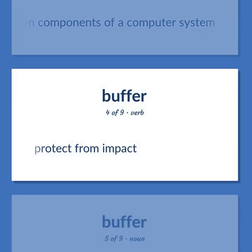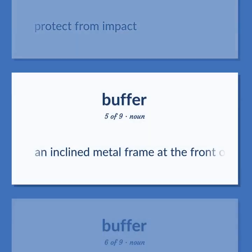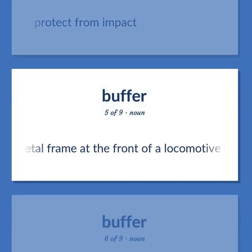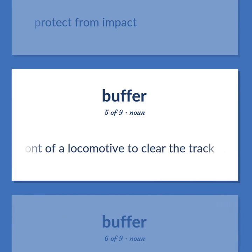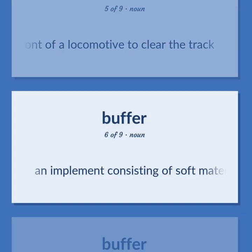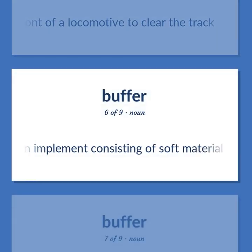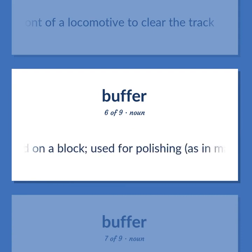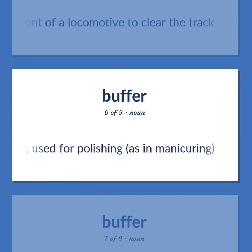Buffer: protect from impact. An inclined metal frame at the front of a locomotive to clear the track. An implement consisting of soft material mounted on a block, used for polishing, as in manicuring.